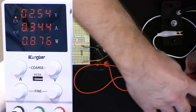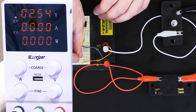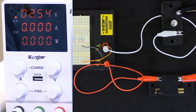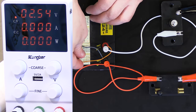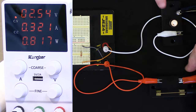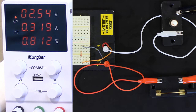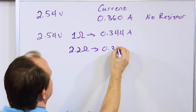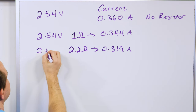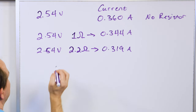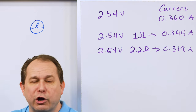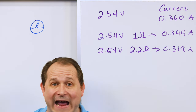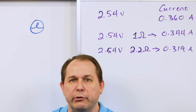I'm going to take this resistor out and put in a new one — a 2.2 ohm resistor. This is noticeably dimmer. The current flowing right now is 0.319 amps, but notice the voltage is the same 2.54 volts. With a higher resistance, I'm getting a lower value of current. When I increase the resistance in the circuit, it's lowering the current because there are more collisions happening, essentially choking off the current flow.